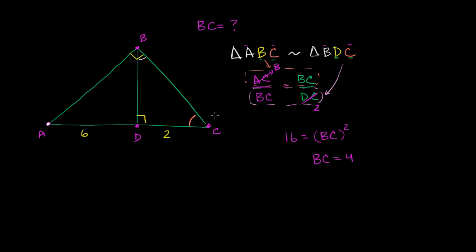BC is equal to 4. And we're done. And the hardest part about this problem is just realizing that BC plays two different roles, and just keeping your head straight on those two different roles. And just to make it clear, let me actually draw these two triangles separately.